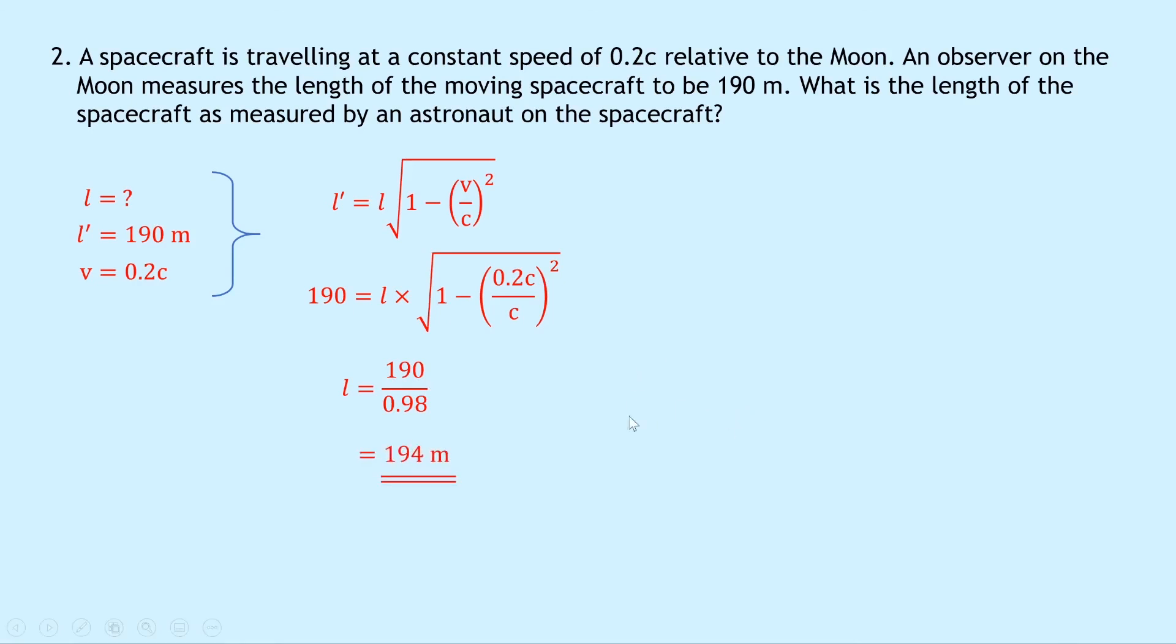Now a quick check to see if this is a reasonable answer is that our proper length L should be a bigger value than our relativistic length L dash and that's because the length is going to get smaller. So this is true here so this is bigger than our relativistic length. So that means our answer seems okay here.